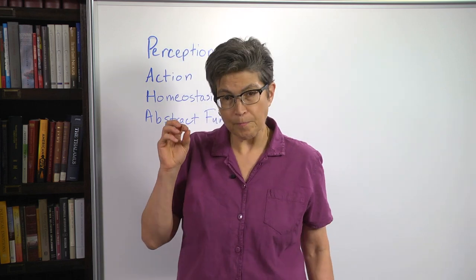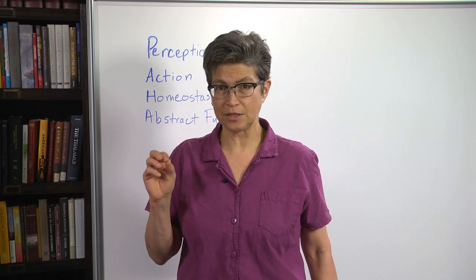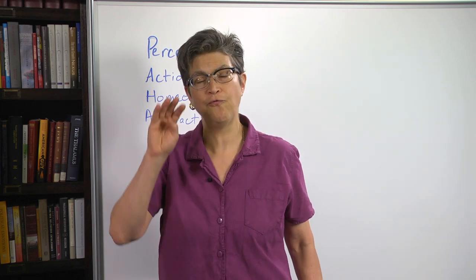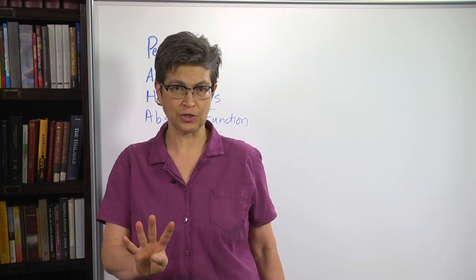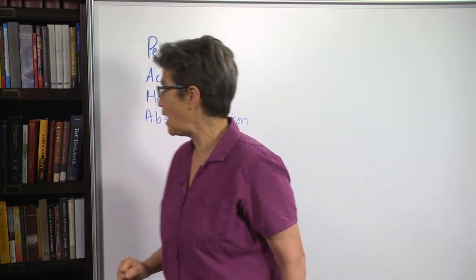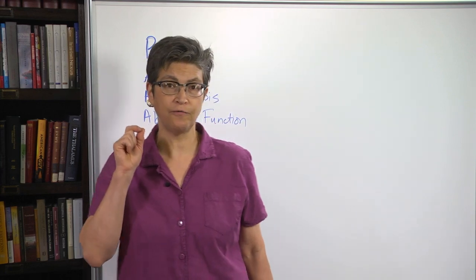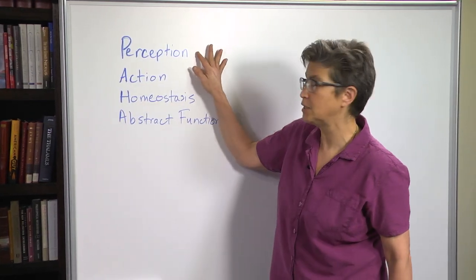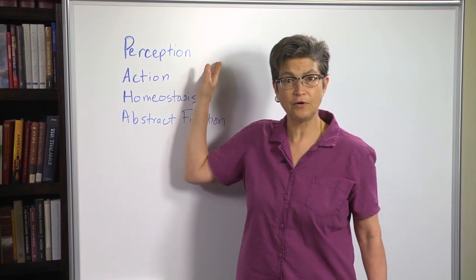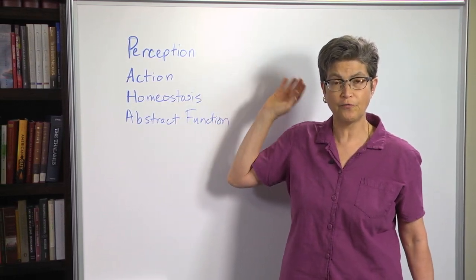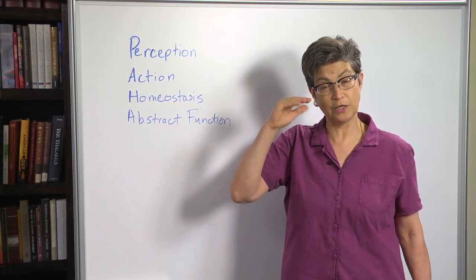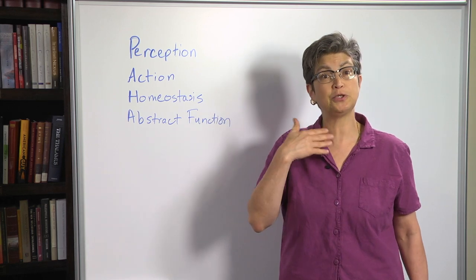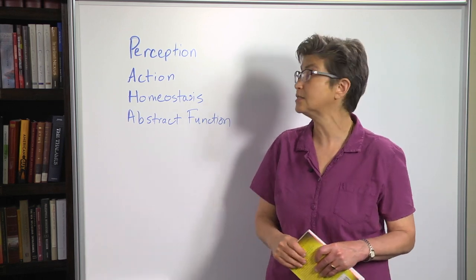So what Bauby's story allows us to recognize are four fundamental functions of the nervous system. And these are the four functions that we're going to focus on through this course. So the first one is perception. And his perception, his visual and olfactory perception were unimpaired, and we'll see exactly why that is.